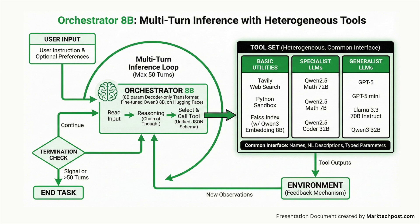Orchestrator 8B is an 8B parameter decoder-only transformer obtained by fine-tuning QUEN3 8B as an orchestration model and released on Hugging Face. At inference time, it runs a multi-turn loop where it reads the user instruction and optional preferences, reasons in a chain-of-thought style, then selects and calls a tool using a unified JSON schema, with the environment feeding tool outputs back as new observations until a termination signal or a limit of 50 turns.